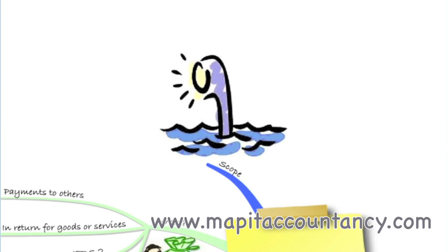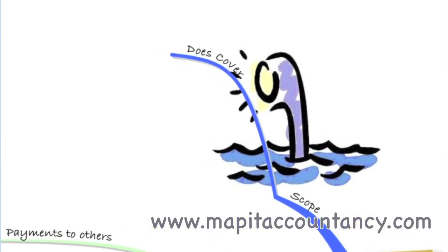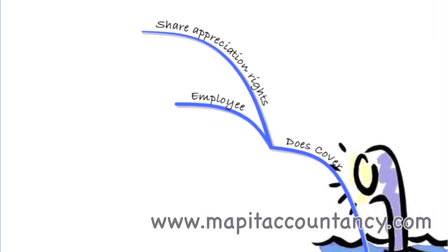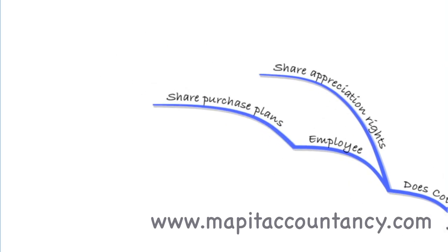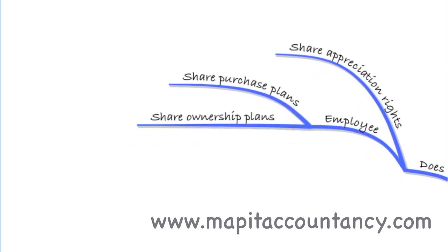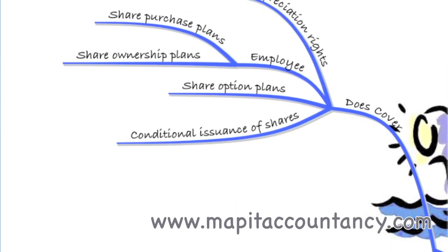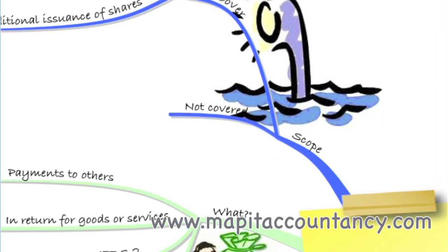So first of all, the scope of IFRS 2. We need to know what it does cover. It covers share appreciation rights — that's where employees get cash based on the appreciation of the share price. It covers employee share purchase plans, employee share ownership plans, share option plans, and any conditional issuance of shares — so issuing shares on various conditions. But equally important are the things it does not cover, which the examiner will often put in as a red herring.